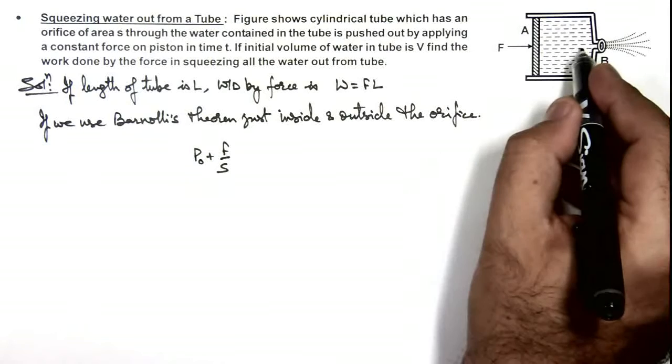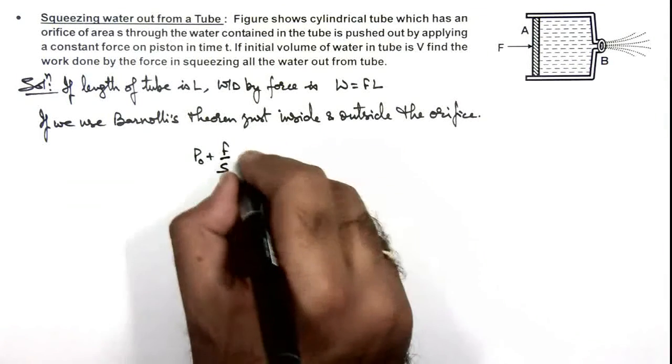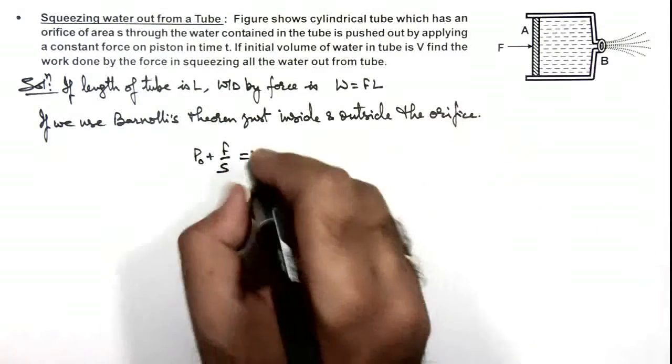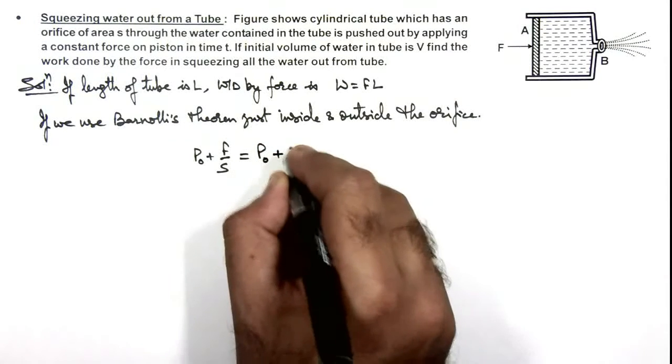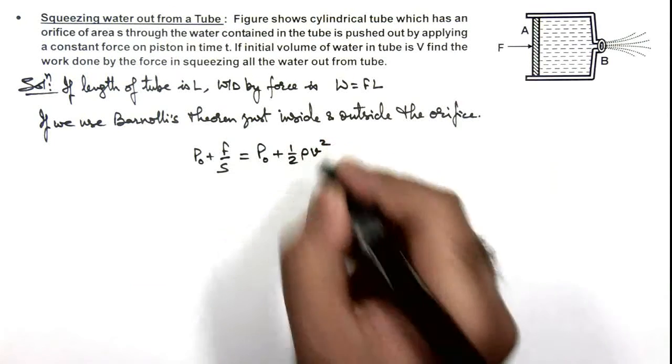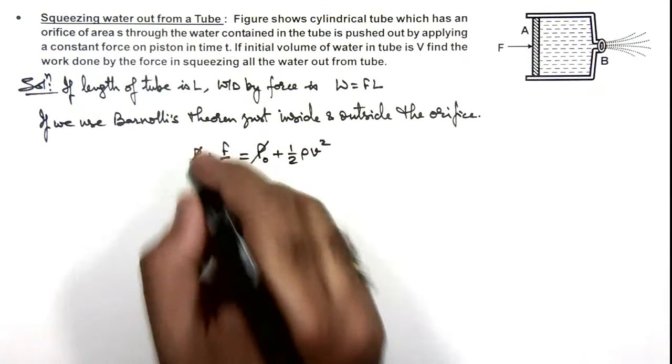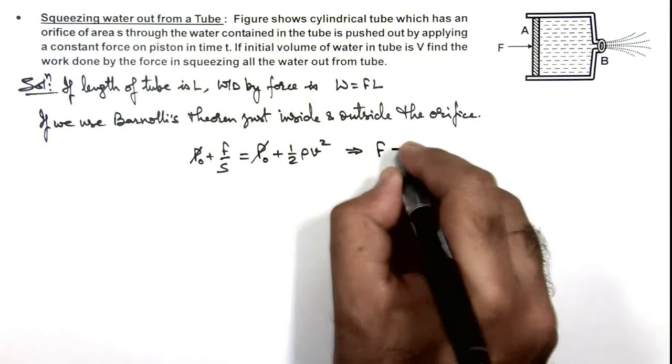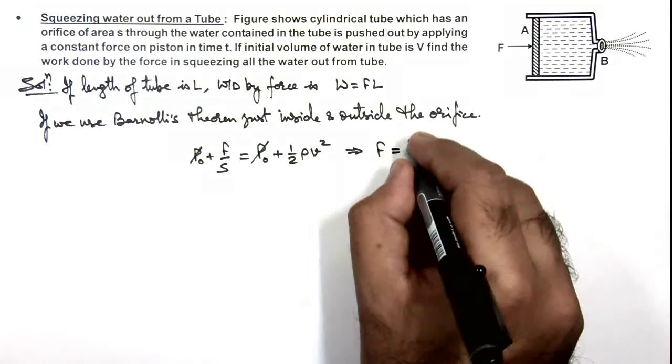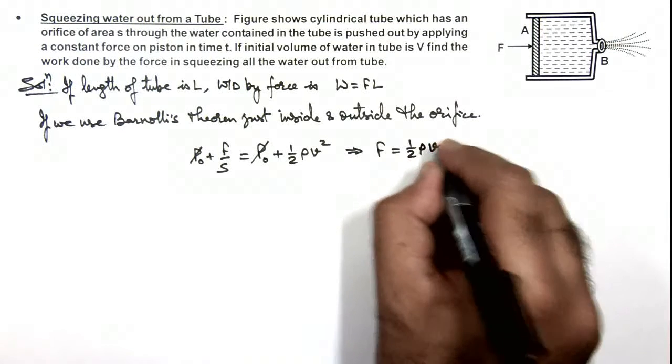We can neglect the fluid velocity inside. Just outside the orifice we can write P₀ is the atmospheric pressure plus the kinetic energy of fluid is half ρv². Here P₀ gets cancelled out, and we get the value of force applied in terms of the efflux velocity as F equals half ρv²s.